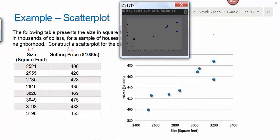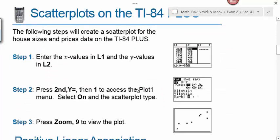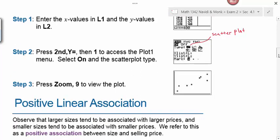Are there any questions about how you do the scatter plot on the calculator? Your first step is to put your data into a list, then hit second y equals, then 1 to access plot 1. Make sure it's turned on. Select the first graph, which is your scatter plot. You're prompted to put your data into both an x-list and a y-list. Then hit zoom 9 to see the right window.